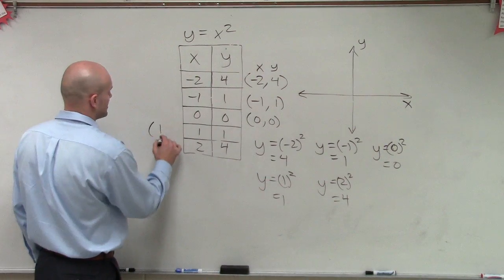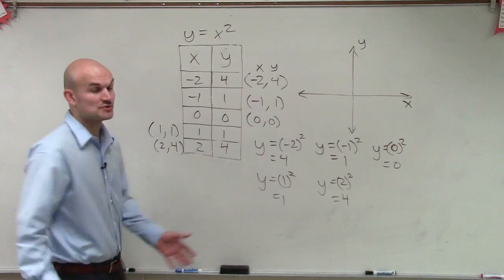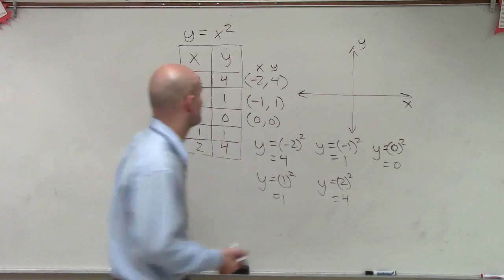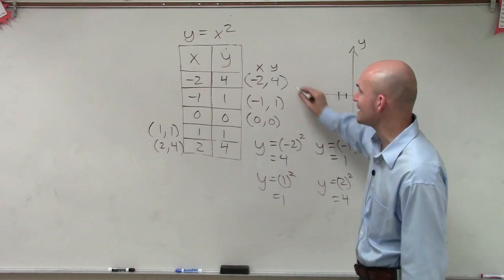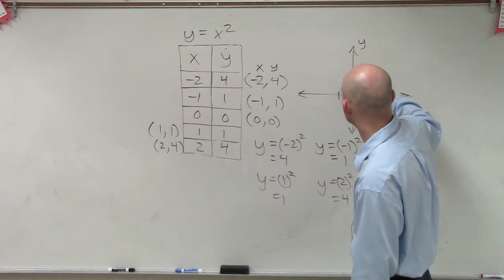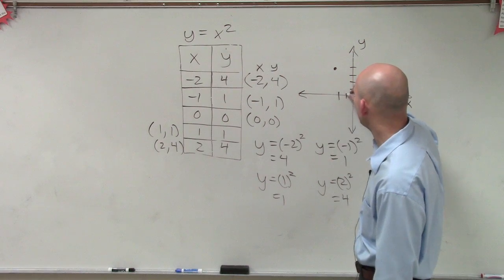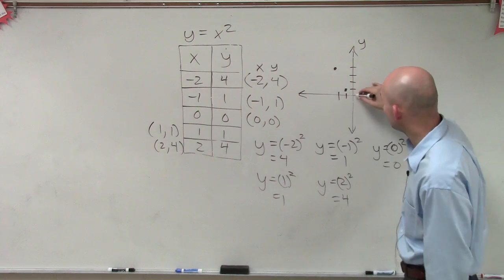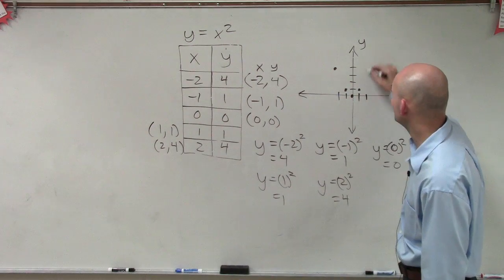So now that I have these coordinate points, I'll put these coordinate points over here to save a little space. Now what we're going to do is we're going to plot these coordinate points. So the first coordinate point will be at negative 2. So I go over negative 2 on my x-axis, because negative 2 represents my x coordinate. And then I'll go up 4. 1, 2, 3, 4. Then I'll do negative 1 over 1. 0 comma 0. Over 1, up 1. And over 2, up 4.